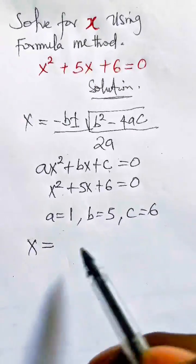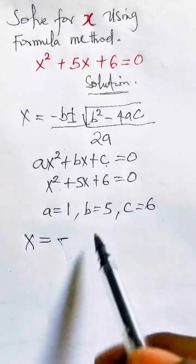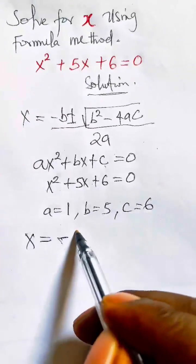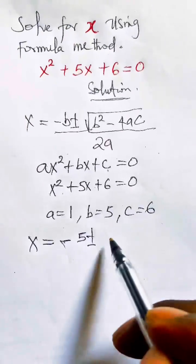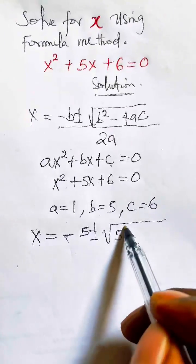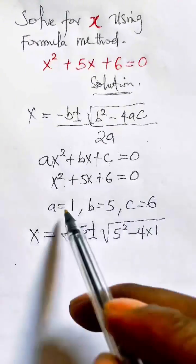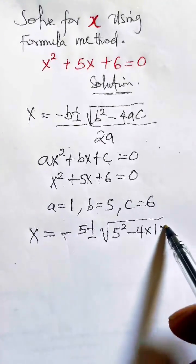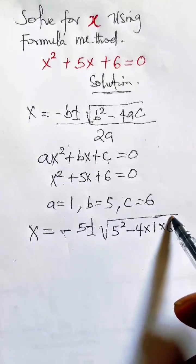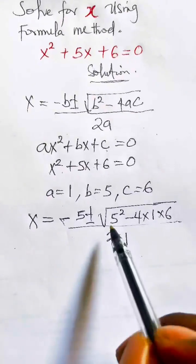x equals minus, your b now is 5, so minus 5 plus or minus square root of b. I said b is 5, so 5 squared minus 4 times 1, your a is 1. C is 6 times 6. Make sure you say this square root covers everything, all divided by 2 times 1 because your a is 1.